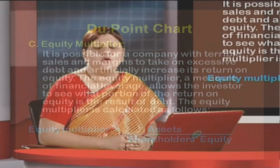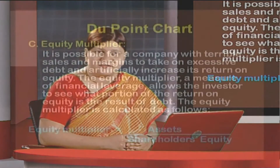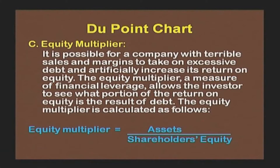The last and most important component of the DuPont chart is the equity multiplier. It is possible for a company with terrible sales and margins to take on excessive debt and artificially increase its return on equity. The equity multiplier, a measure of financial leverage, allows the investor to see what proportion of return on equity is the result of debt. It is calculated as: Equity Multiplier = Assets / Shareholders' Equity.